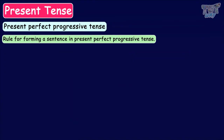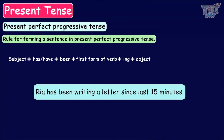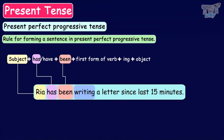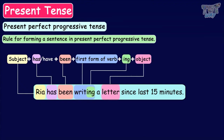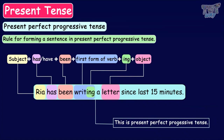The rule for forming a sentence in present perfect progressive tense is: subject plus has or have plus been plus the first form of the verb with ing, and then the object. For example, 'Rhea has been writing a letter since the last 15 minutes.' Rhea is the singular subject, so we use has as the helping verb along with been, and writing shows a continuous action. Letter is the object. This sentence means that Rhea started writing a letter 15 minutes ago and is still writing.